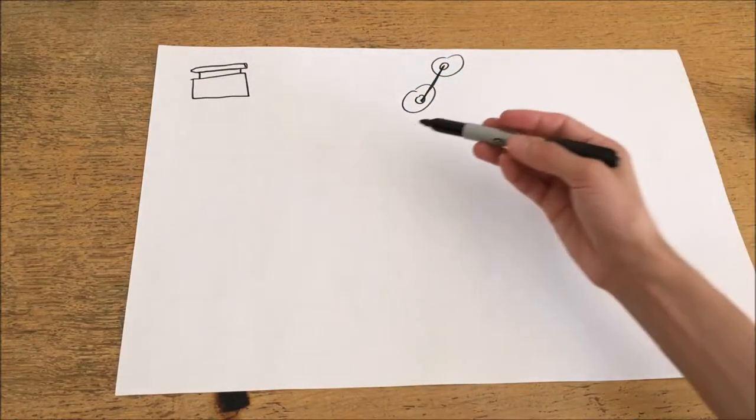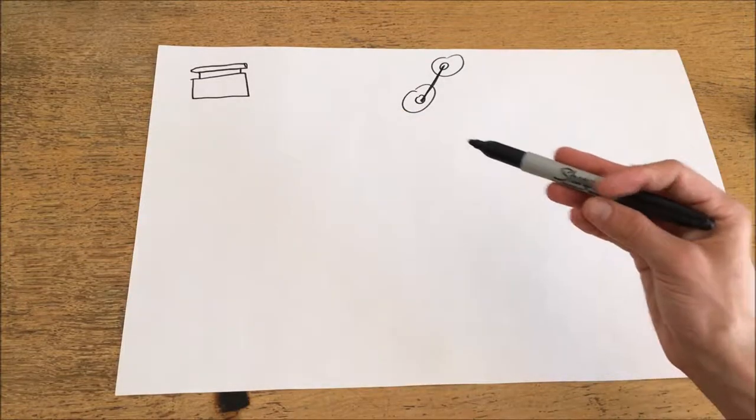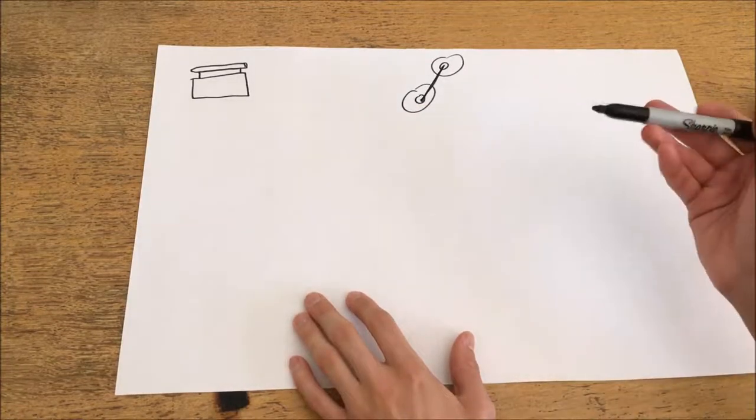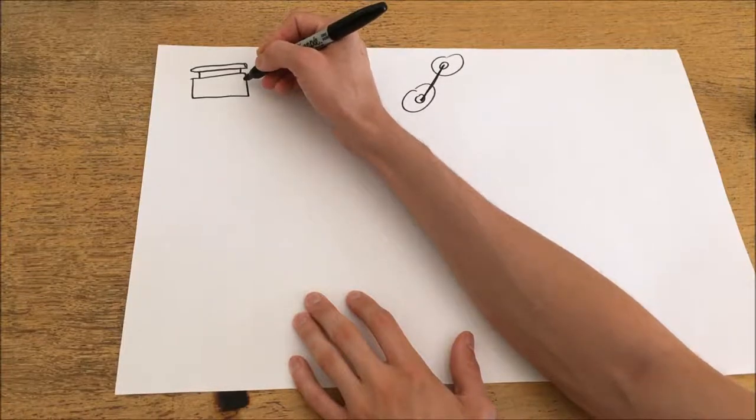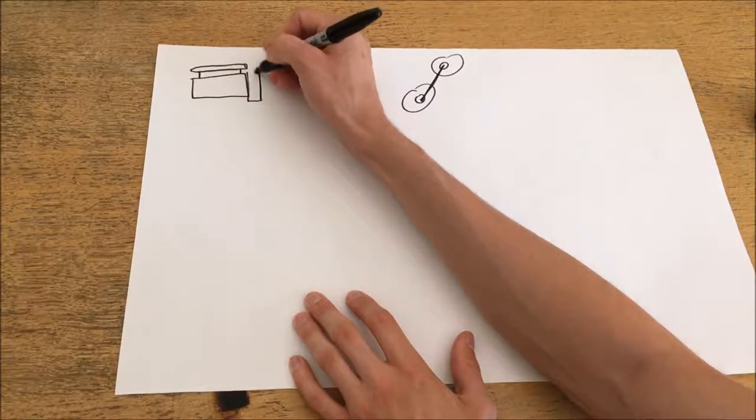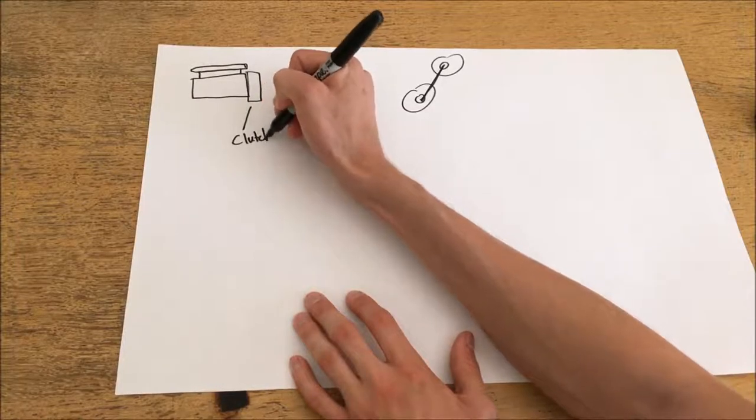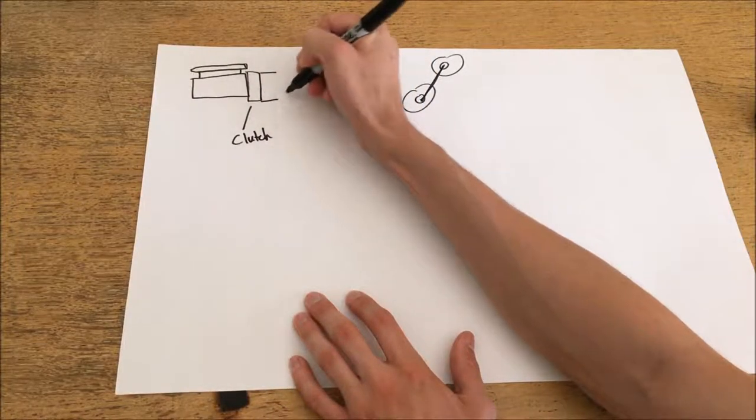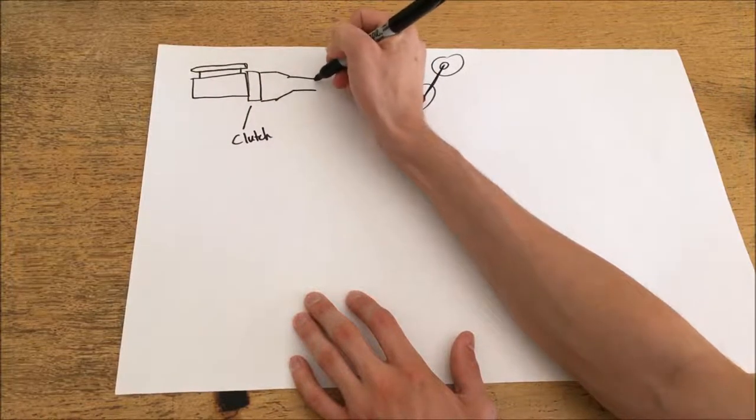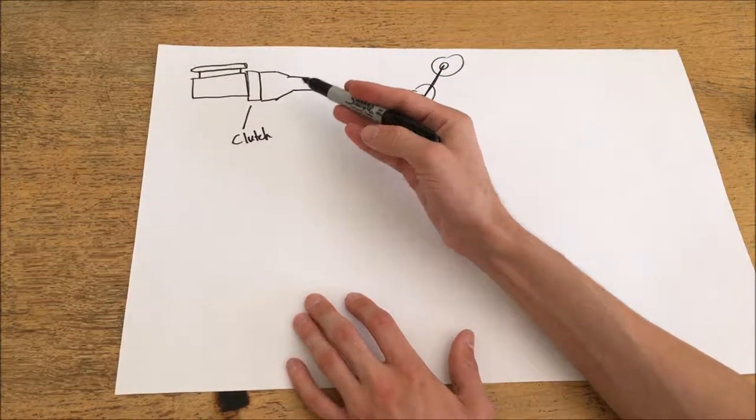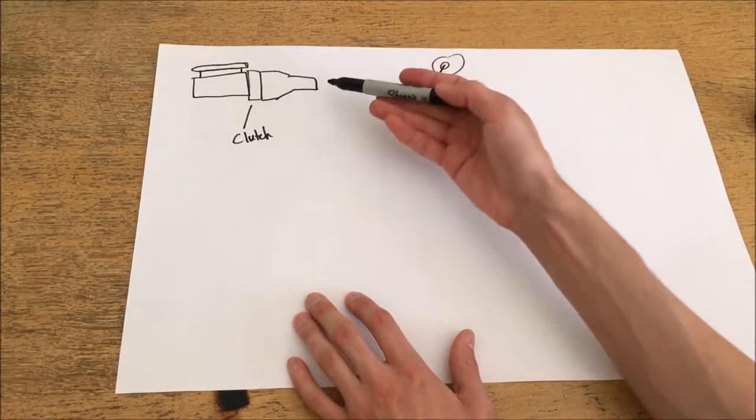Now there's a few different components that are connected in this train of connections. The first, of course, between the engine and the transmission, is the clutch. So I'll just mark that clutch. And then we have the transmission itself, which is the gear ratio, shifting gearbox, that you would refer to as the manual transmission in the vehicle.